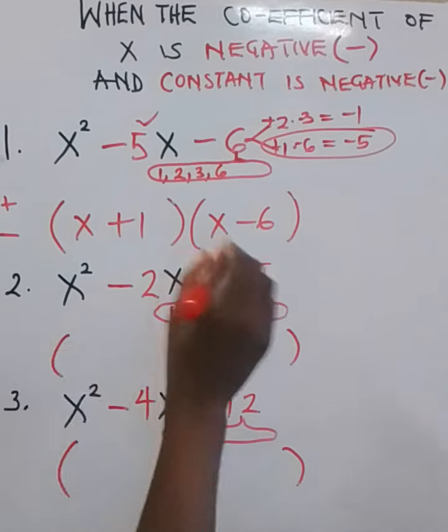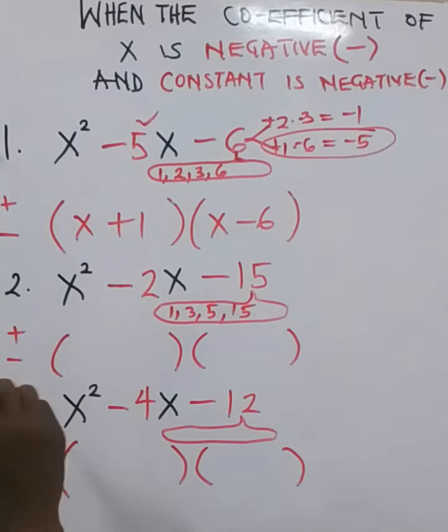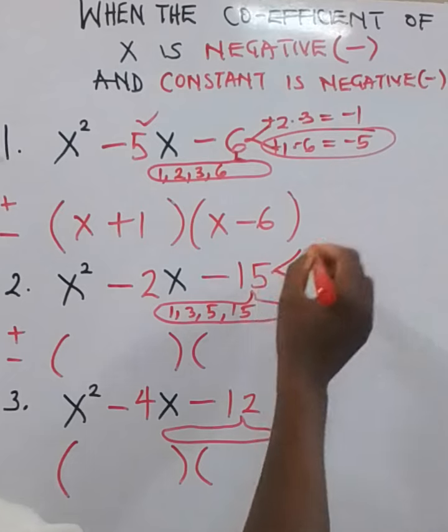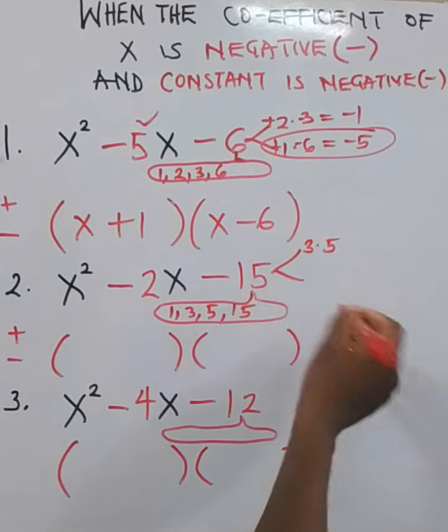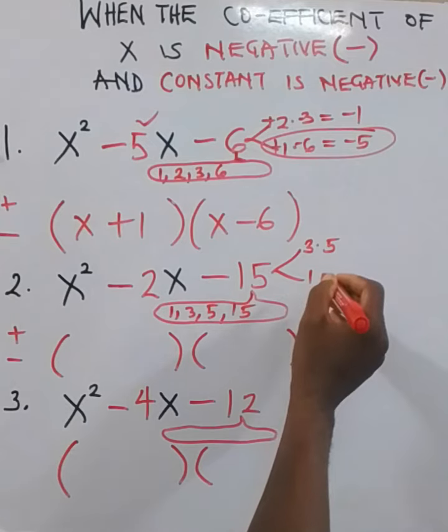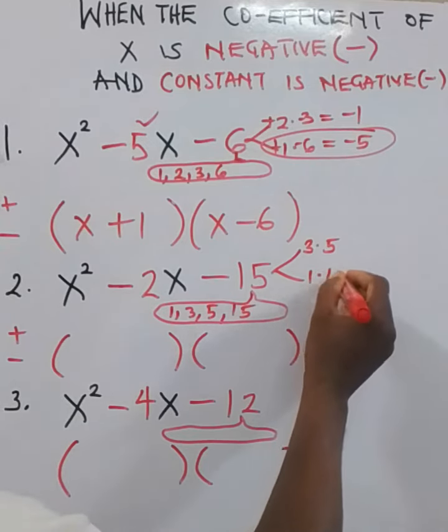Don't forget, among the two factors, one must be positive, the other one must be negative. So let me pick the two now. Let me pick 3 times 5, 15. 1 times 5, still 15.